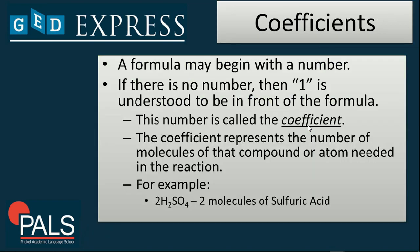Now, that is the subscript. Coefficients is when a formula may be given with a number. If there's no number, like what I've explained, then one is understood to be in front of the formula. This number is called a coefficient or it could be a subscript.